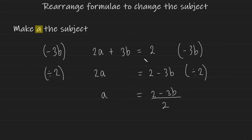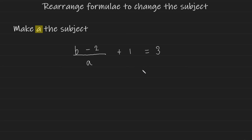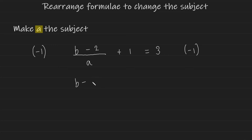Let's take a look at a slightly more complicated example involving fractions, where the variable you'd like to rearrange for is a denominator. We want to make a the subject and it's in the denominator. Since there's a 1 being added onto the entire fraction, I can eliminate it straight away — minus 1 on both sides — leaving b minus 2 over a equals 2.